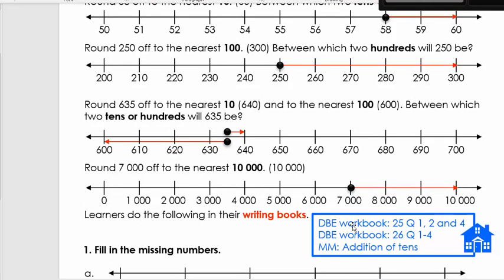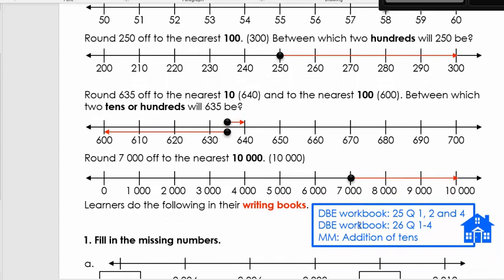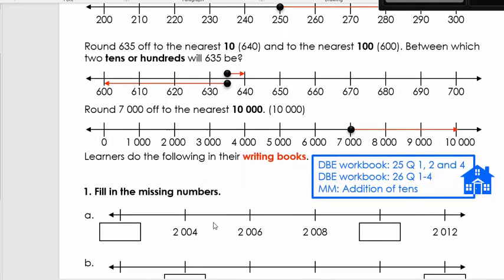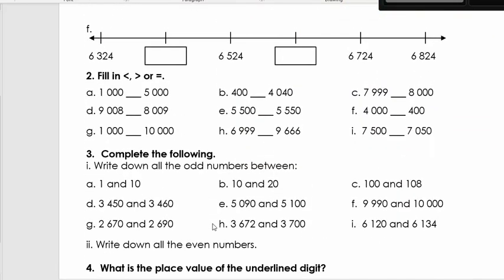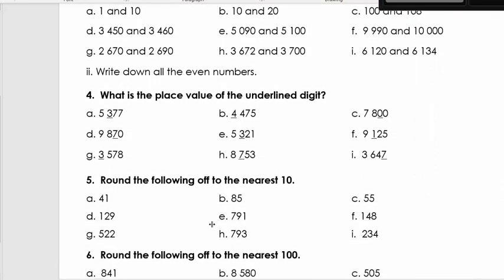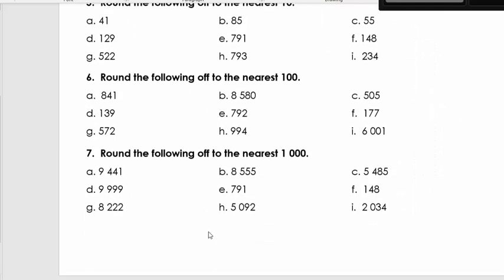So now we're going to start with our workbook activities. So firstly, you could use your DBE book. And here are the worksheet numbers and the questions that you can do. Mental mathematics, we're going to practice addition of 10s. Or you can download SA Teachers worksheet from our website, where the learners, these can then be printed and they can complete it.